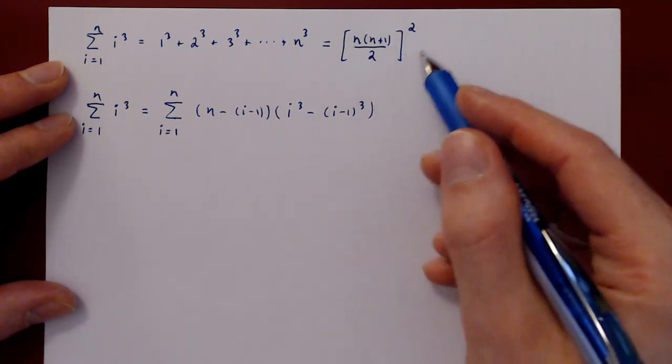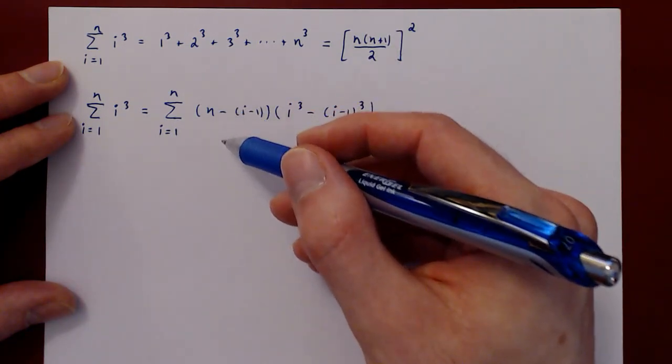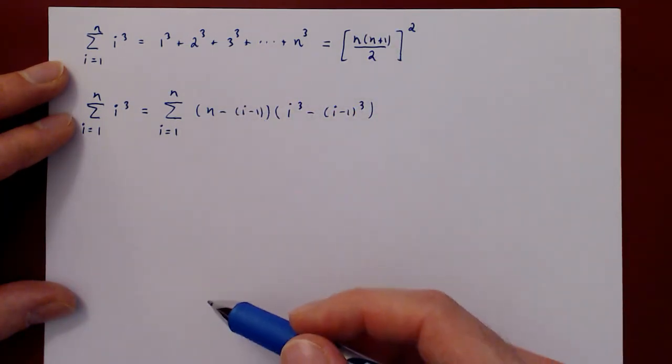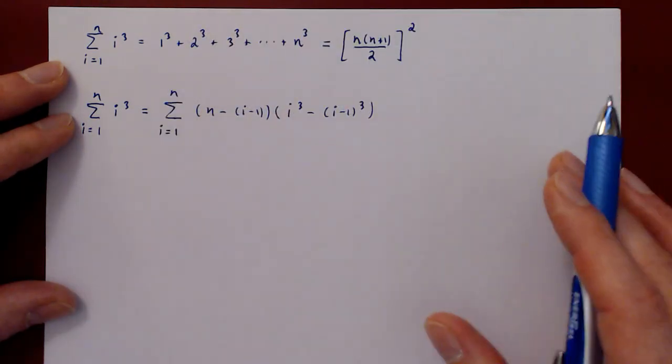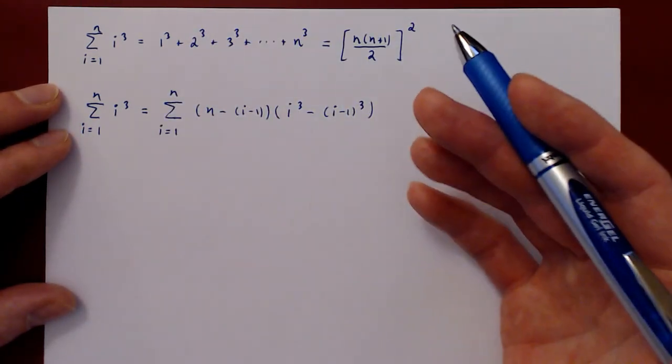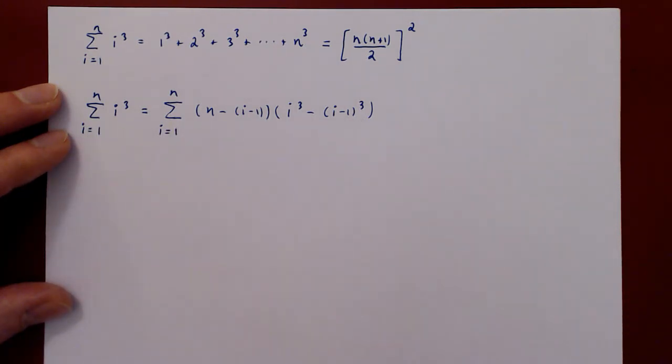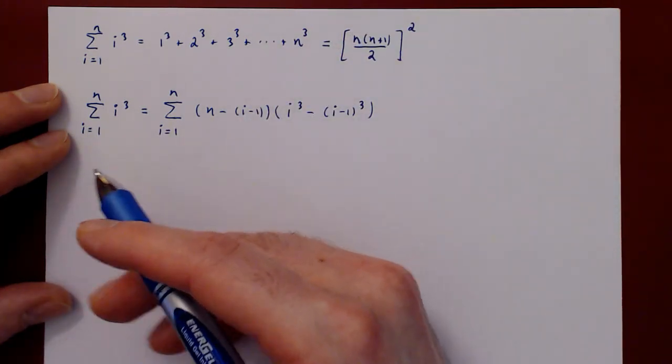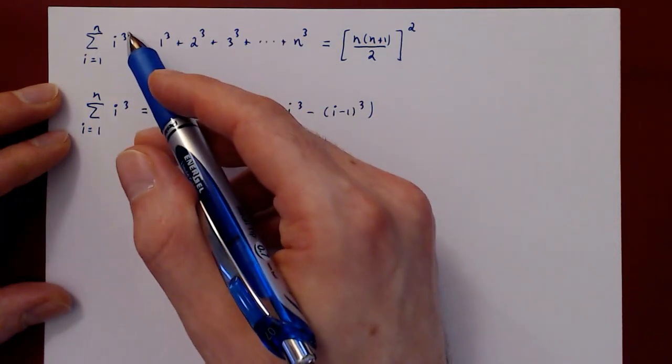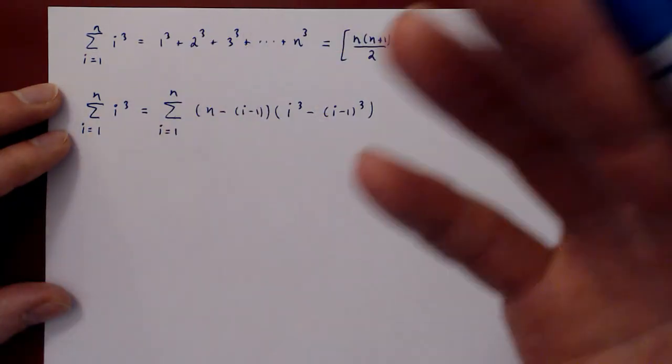Remarkably simple result, following exactly the same footsteps of our previous solution. And you might ask, okay, this is for cubes. What if we wanted to obtain a summation formula for i to the 4 or i to the 5? Can we do it?